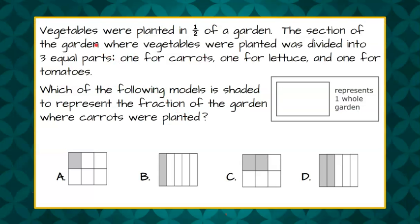Here's your question. Vegetables were planted in half of a garden. The section of the garden where vegetables were planted was divided into three equal parts - one for carrots, one for lettuce, and one for tomatoes.